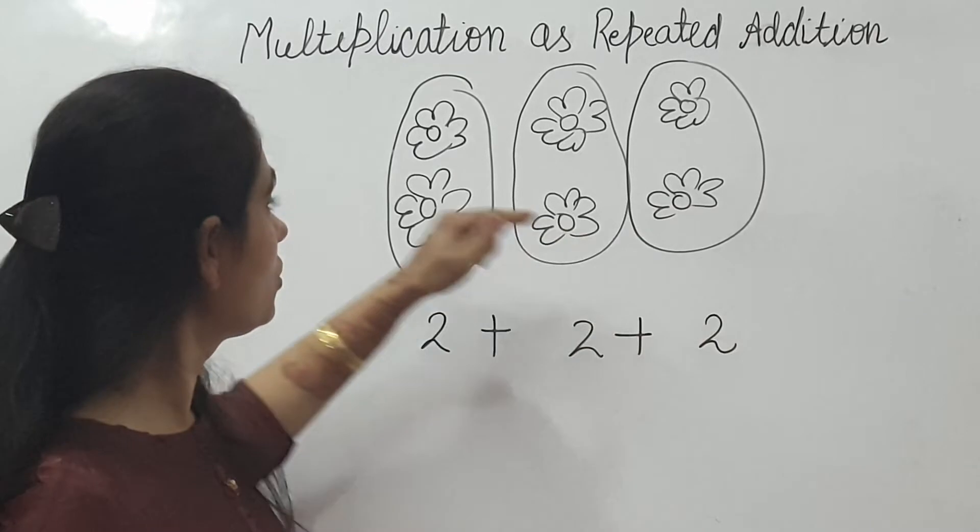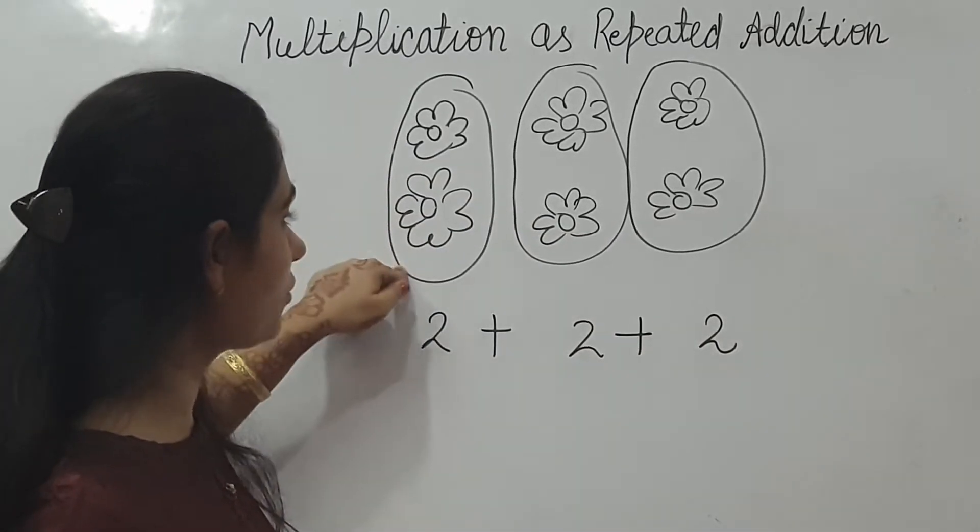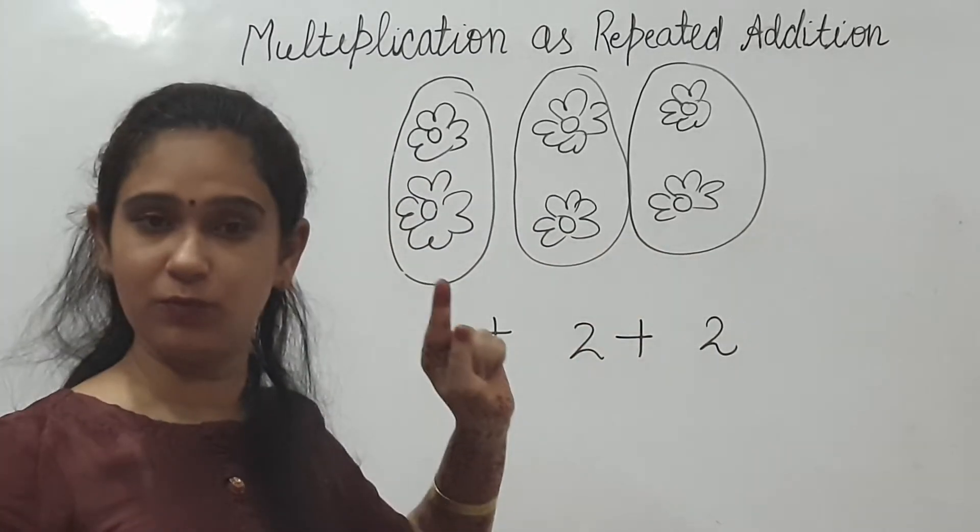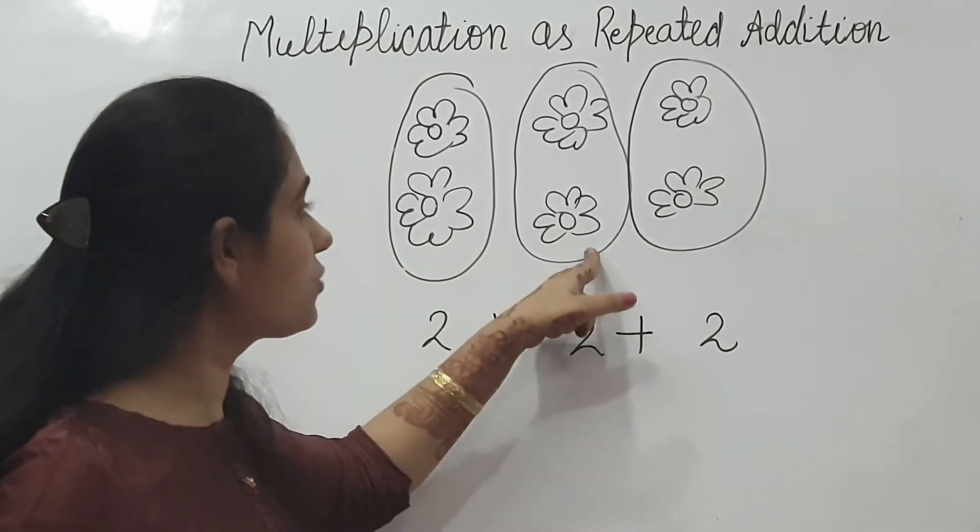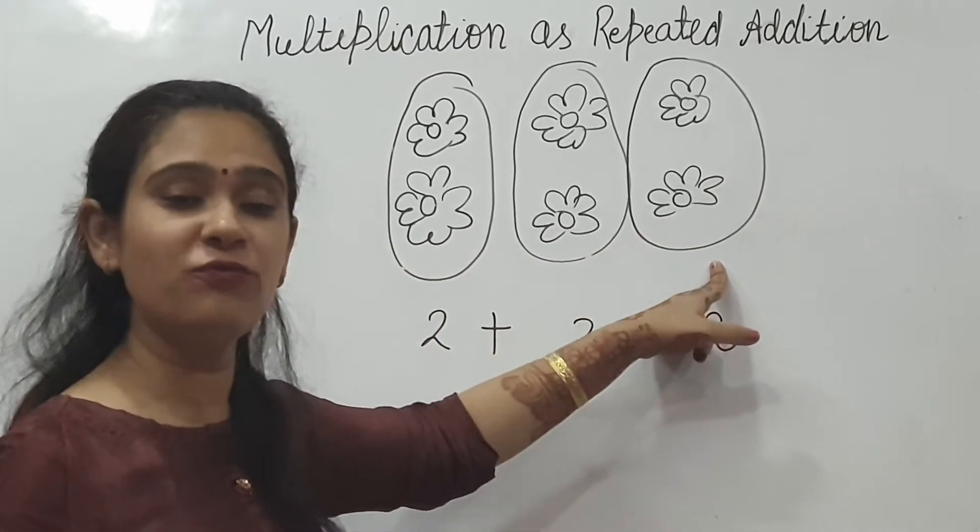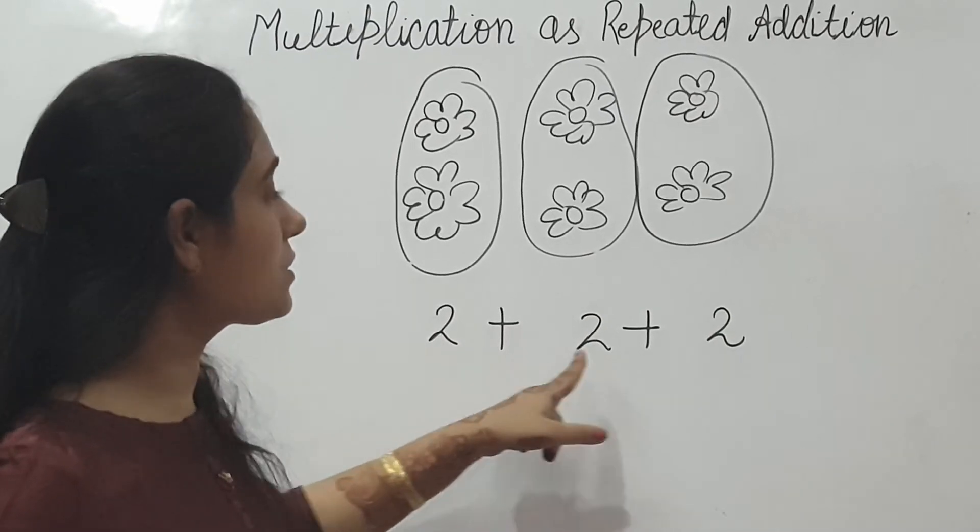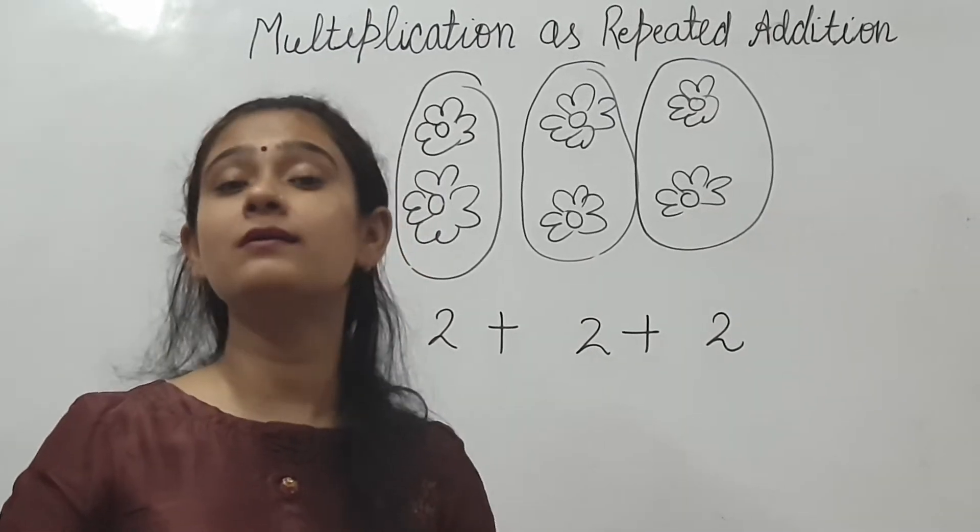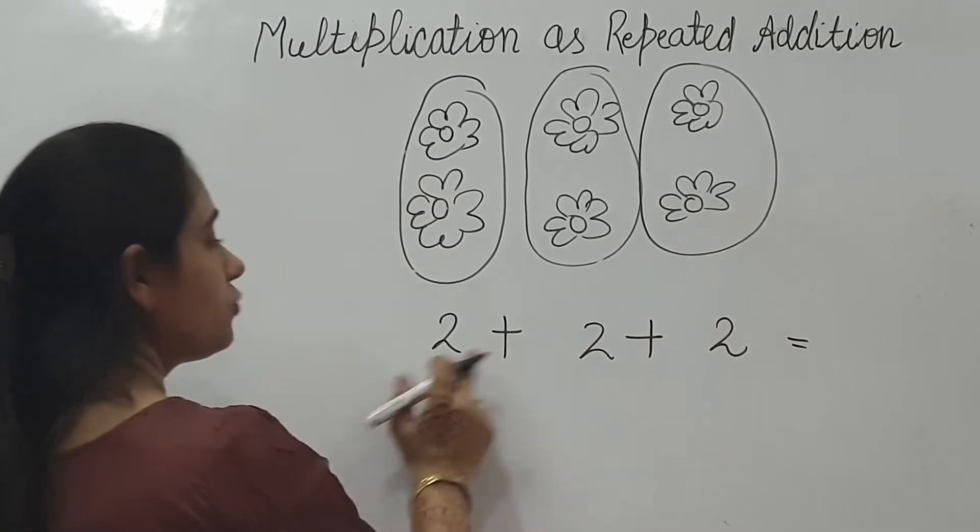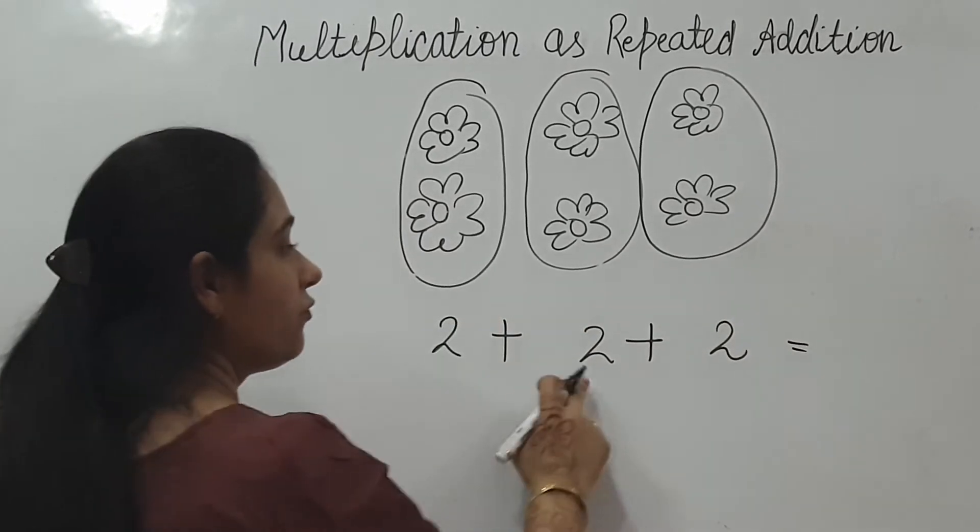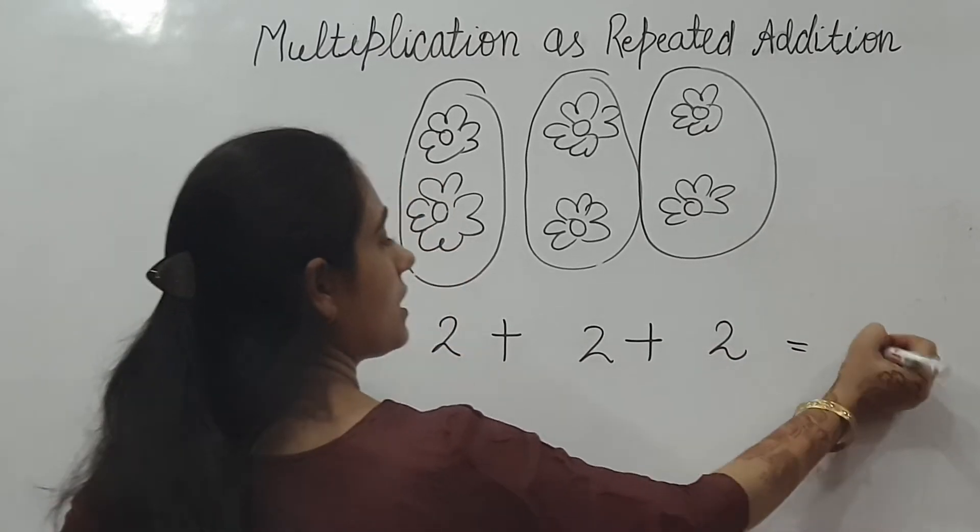Two flowers in three groups. How many groups? Two flowers in one group, two groups, three groups. Two flowers right? First group has two flowers. Second group also has two flowers. Third group also has two flowers. Look, two plus two plus two. Two flowers are being repeated again and again. Count this. Two plus two, four. Four plus two, six.